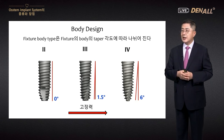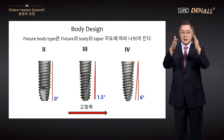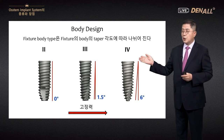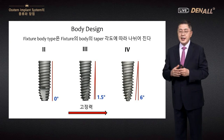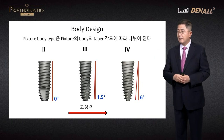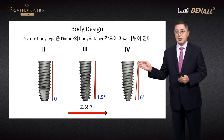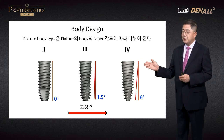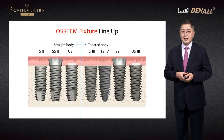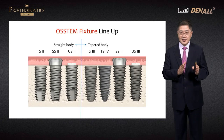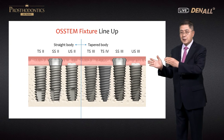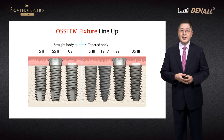Numbers are placed in Ostem implant names. Microthread straight body is number 2; 6-degree taper is number 4; slightly tapered 1.5 degrees is number 3. As taper increases, it provides better primary stability in poor quality bone. TS4 is useful for the maxillary posterior region. All implant series — TS, US, SS — have these numbers at the end; number 2 is straight body and the number increases as it becomes more tapered.